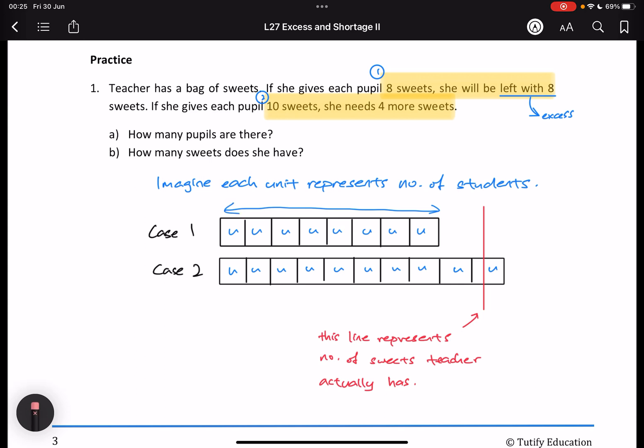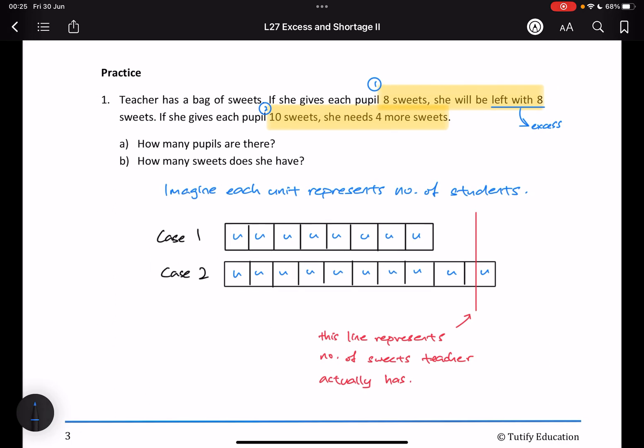okay, I'm giving away eight units of sweets. And this line represents, this red line represents the actual number of sweets, this is the excess.